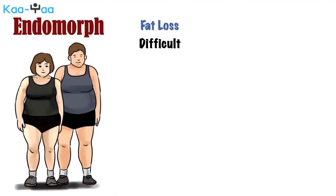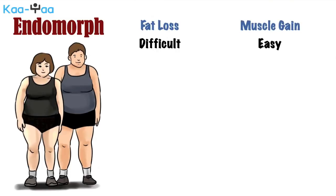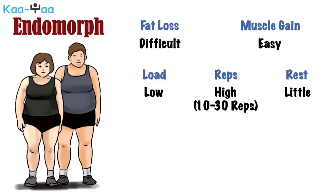An endomorph has a tendency of retaining body fat. Underneath that fat though, many endomorphs usually have big and strong muscles. For endomorphs, the most important thing is to lose fat while maintaining muscle mass. An endomorph therefore needs a workout optimized for fat loss, which, as you might know from our previous videos, is the one with high repetitions and little rest between the sets.